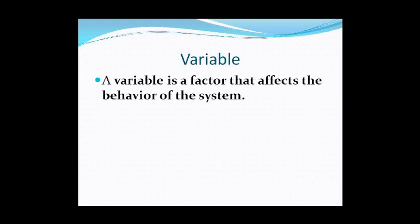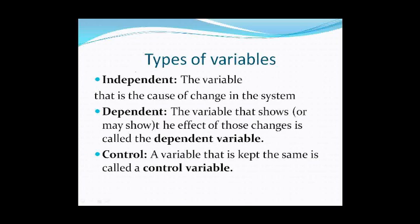A variable is a factor that affects the behavior of the system. There are several different variables, and these are the big ones. This is the one I want you to get more than anything else: the independent. There's a definition there, but this is the one we mess with, we change it.